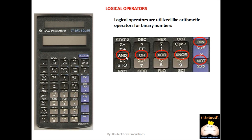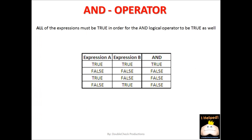The only difference is that we're going to be doing this with coding. And because we're using binary values, that means we're going to be using true and false values, which is a Boolean data type. To get started, we're going to start with the AND operator. The way this works is that all of the expressions must be true in order for the AND logical operator to be true as well.